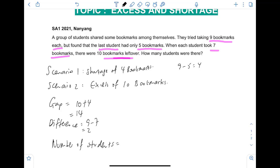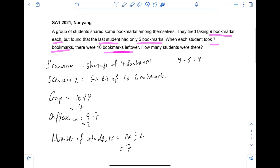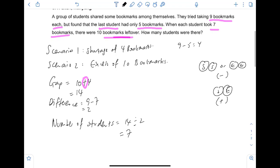You just take the gap divided by the difference. So 14 divided by two, there will be seven students. We'll do a check in a short while, but before that, I just wanted to explain this again. If you have one excess and one shortage, you will always add the numbers. If both are shortages, you will subtract. So if you have shortage and shortage, or excess and excess, then you'll do a minus. But if one is shortage and another one is excess, then you will do a plus. You add them together to find the gap.